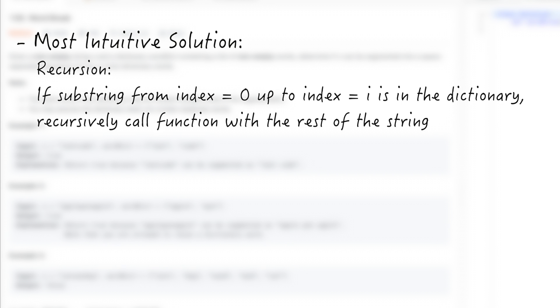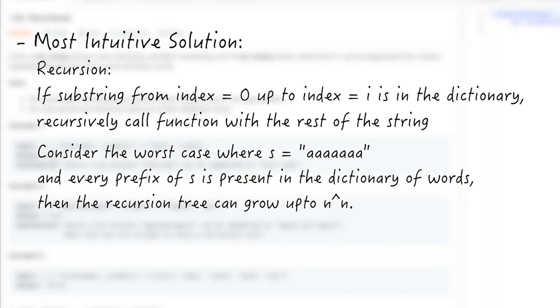Now let's think about what's the most intuitive way to do this problem. The most intuitive way would be using recursion. You'd loop from the very beginning of the word and see if your current position from the beginning can be found in the dictionary. If you can't find it, you recursively call this function with the rest of the string and see if that recursion eventually returns true, meaning your string could be segmented into dictionary words. But let's talk about the runtime complexity of this solution.